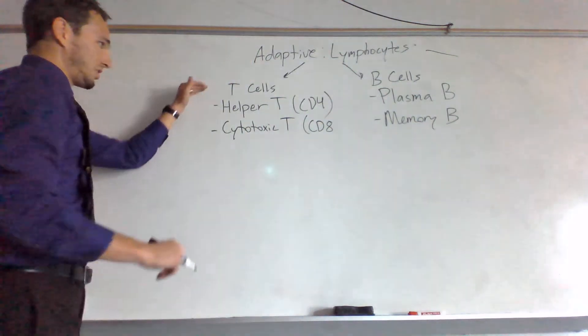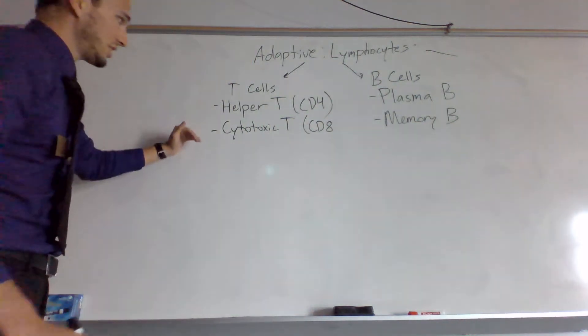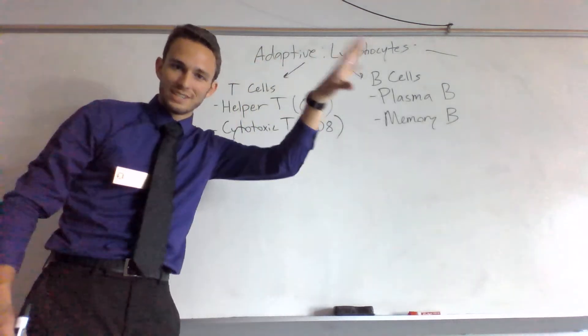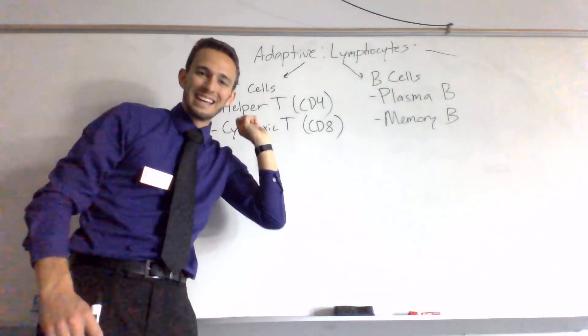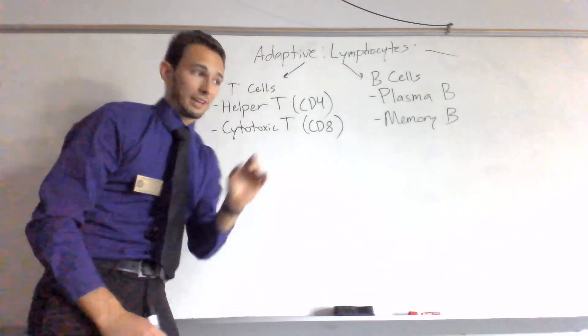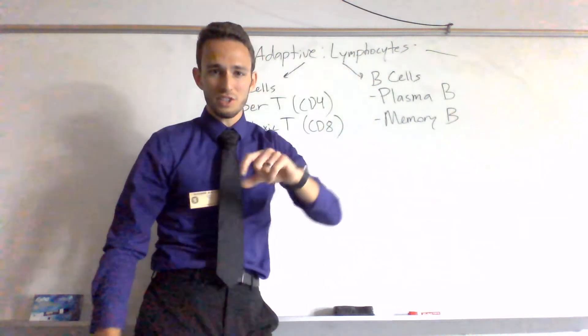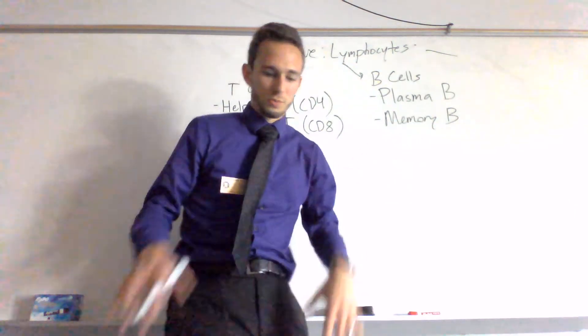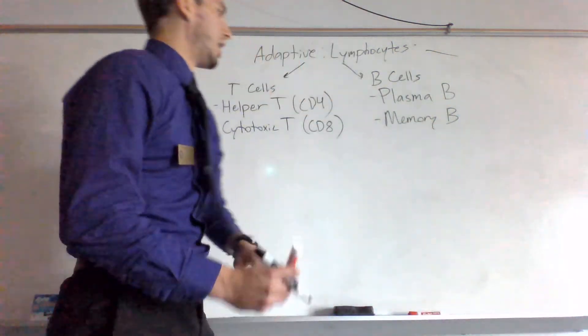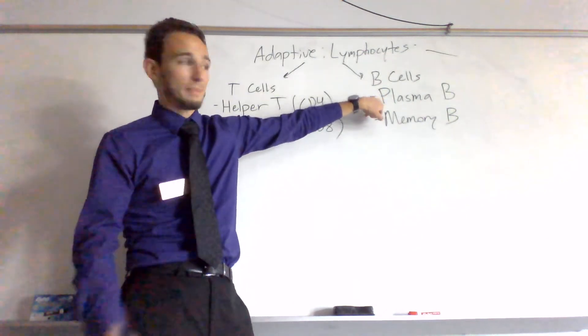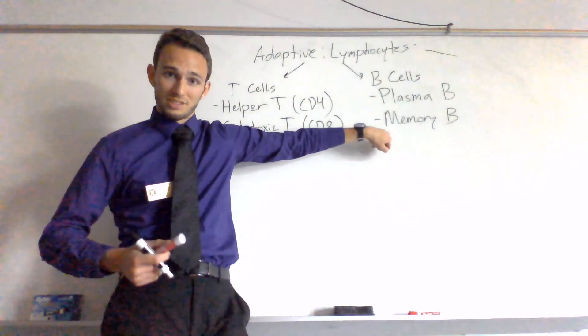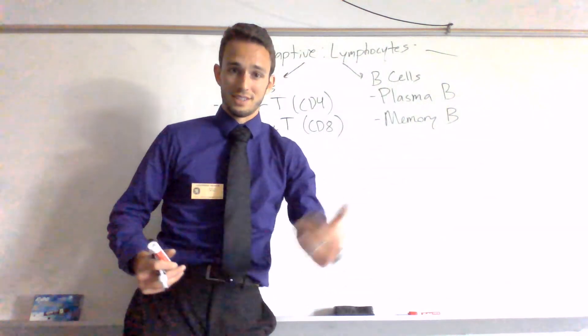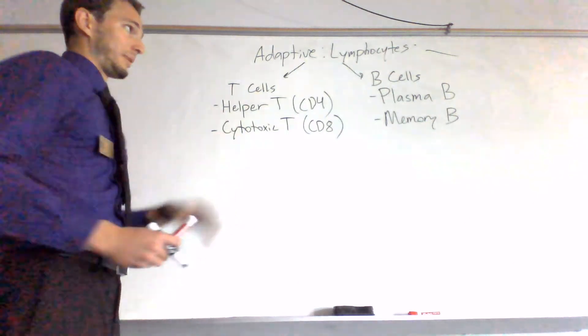When we hear T cells, there's going to be two different segments. There's either the helper T cells or the cytotoxic T cells. Helper T cells have a CD4 antigen and the cytotoxic T cells have a CD8 antigen. Whereas the B cells make antibodies, which we'll talk about next week. There's going to be two types, the plasma B cells which actually make the antibodies, and then memory B cells that will remember how to make the antibodies should another infection occur that's the same pathogen.